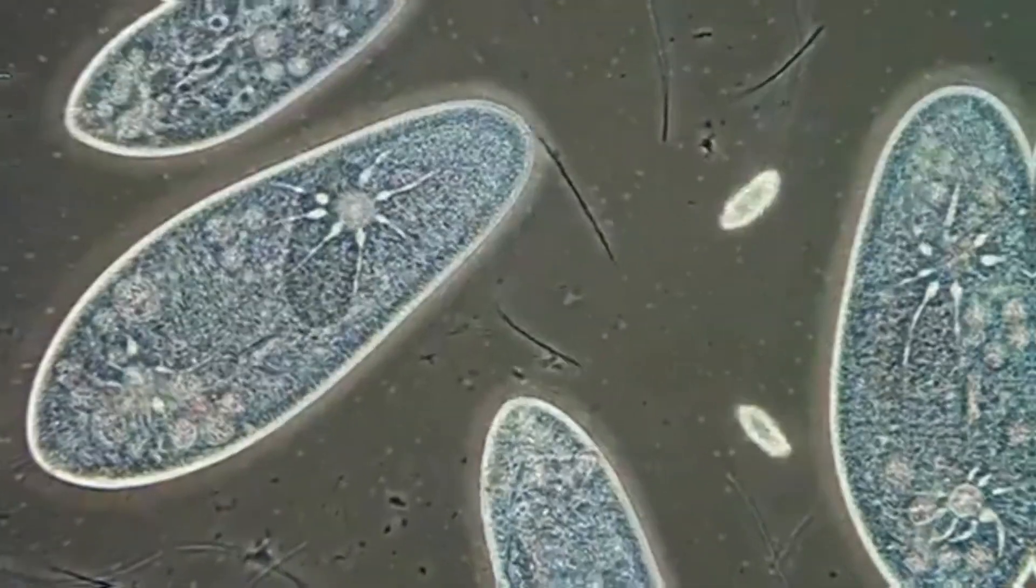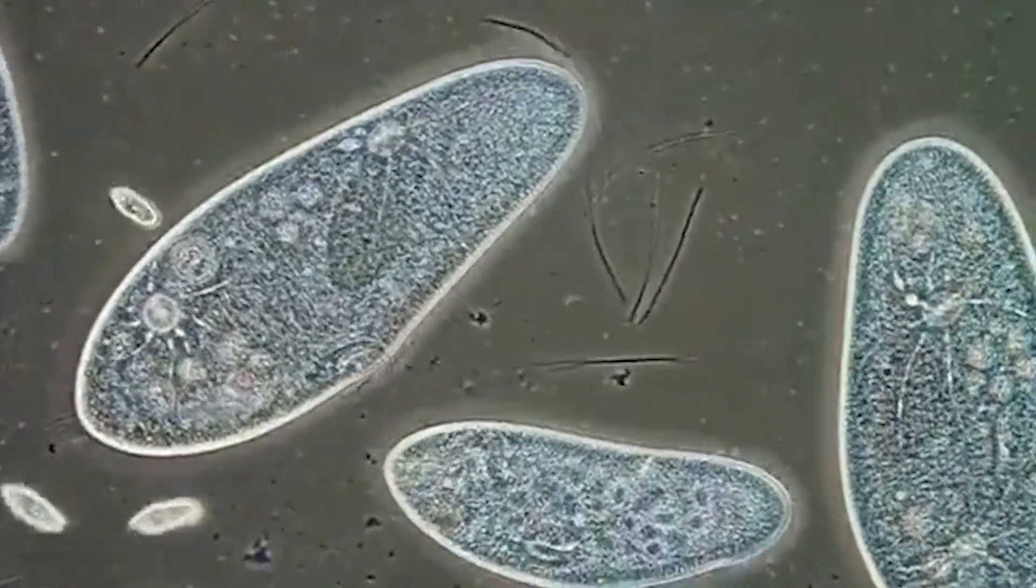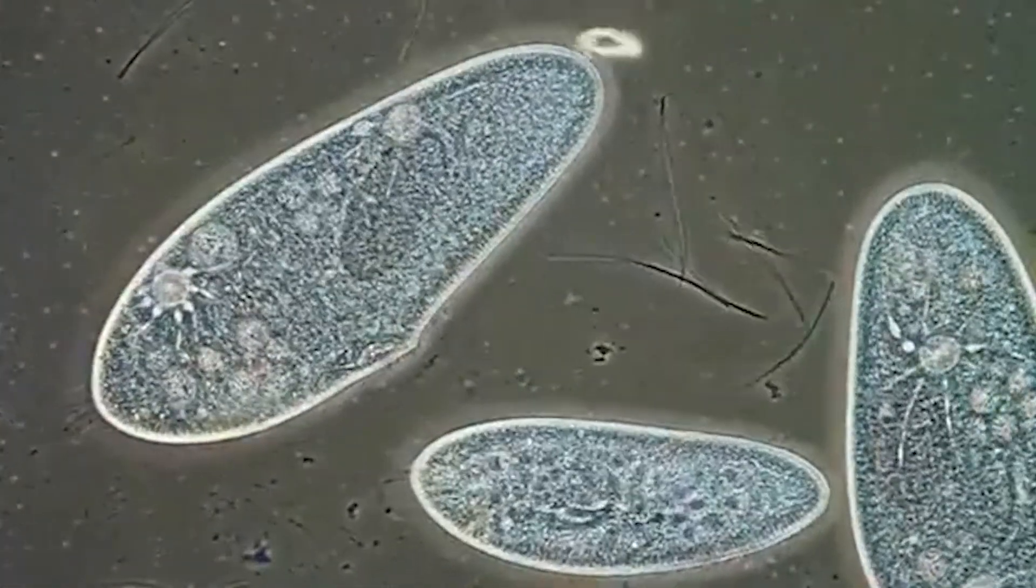They invade cells and take on their characteristics, thus cloaking them from the immune system. When pleomorphic bacteria encounter environmental stress, such as antibiotics, they change form to adapt.